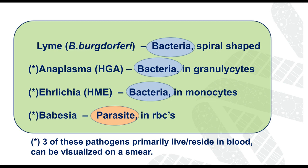This is important because you can find these organisms in a purple-topped tube of whole blood. An easy place to look for Anaplasma, Ehrlichia, and Babesia is directly in red blood cells, monocytes, or granulocytes — you can actually visualize them in a blood smear. In contrast, Lyme disease, Borrelia burgdorferi, is not trophic for blood tissue and is rarely able to be demonstrated in blood. It likes certain tissues — skin, joints, neurologic tissue — but doesn't like to live in your blood.